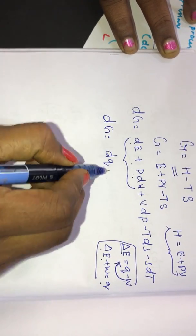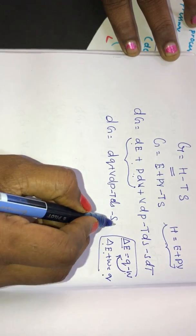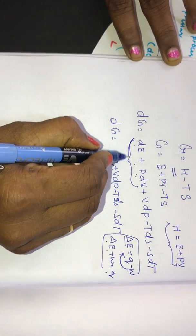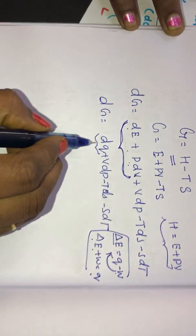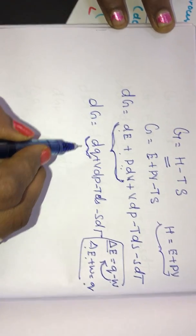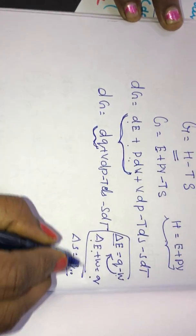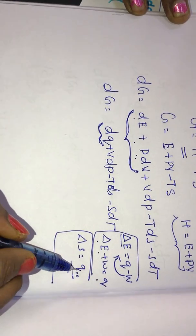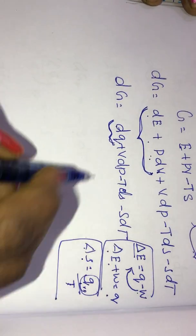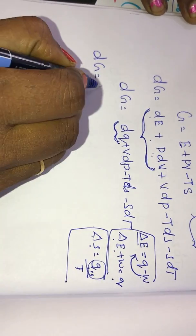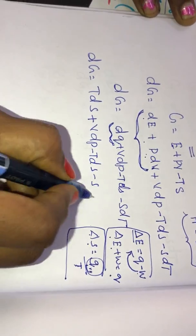So dG is equal to dQ plus V dP minus T dS minus S dT. From the second law of thermodynamics, dQ is equal to T dS, because delta S is equal to Q reversible divided by T. So we now substitute T dS in place of dQ, giving dG equal to T dS plus V dP minus T dS minus S dT.